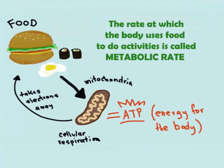The body's metabolic reactions — for example, cellular respiration — extract energy from food by taking electrons away from food. This produces ATP, which is used to provide energy for the body.